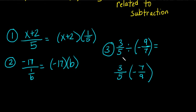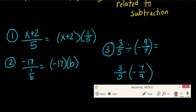Another one, 3 fifths divided by negative 9 sevenths. I'm going to take the numerator, 3 fifths, and I'm going to take my denominator and flip it, get it to its reciprocal, and multiply it by negative 7 ninths. We'll be practicing some of these in class. Thank you very much.